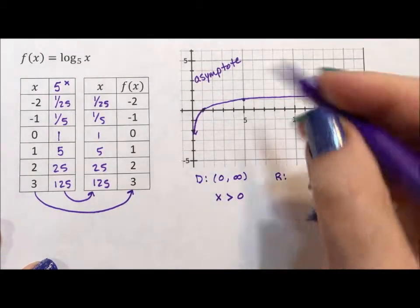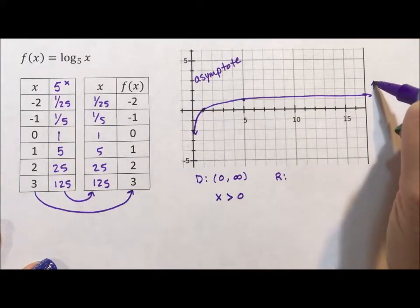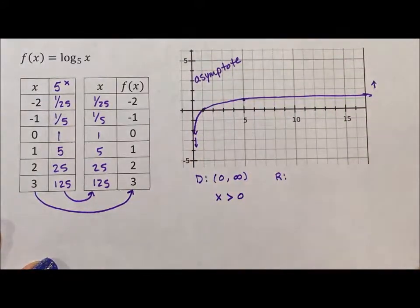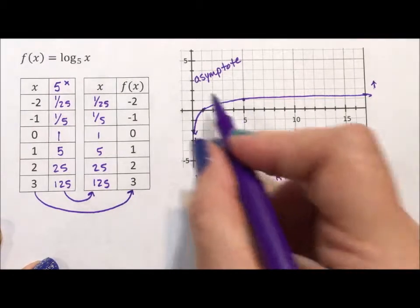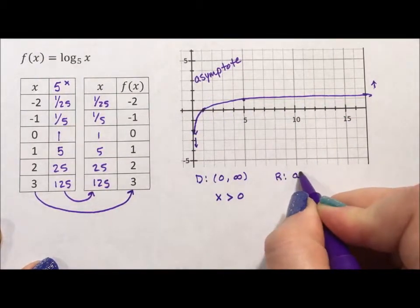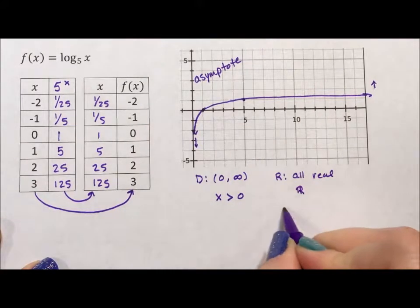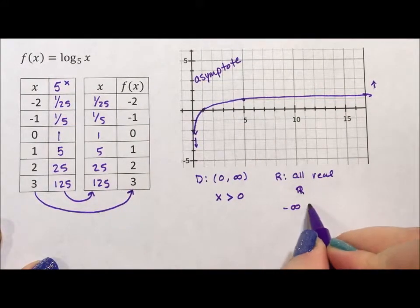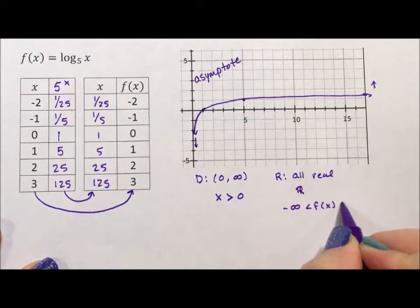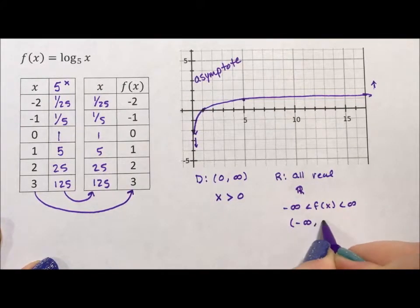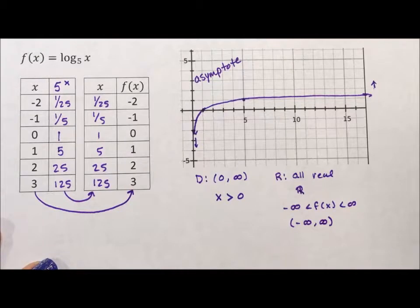My range, that's my up-down values, well, this is going to go forever up, if not slowly, but it will go up. This will go forever down much more quickly. And if it's forever up and down, you can either say all real, you can say double bar r, you can say negative infinity is less than f of x is less than positive infinity, or my favorite, negative infinity to positive infinity in interval notation.